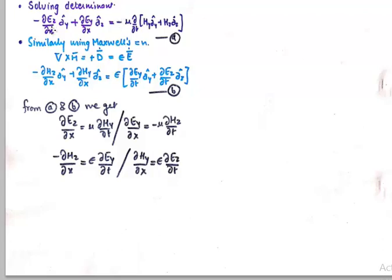Finally, by comparing equations A and B, we find that corresponding parts are equivalent: ∂E_Z/∂x equals −μ ∂H_Y/∂t, and similarly we get four equations relating E_Z and H_Y, E_Y and H_Z, H_Z and E_Y, H_Y and E_Z. On the left-hand side we have rate of change with x, and on the right-hand side rate of change with t — sensible, since any propagating wave changes in both space and time.